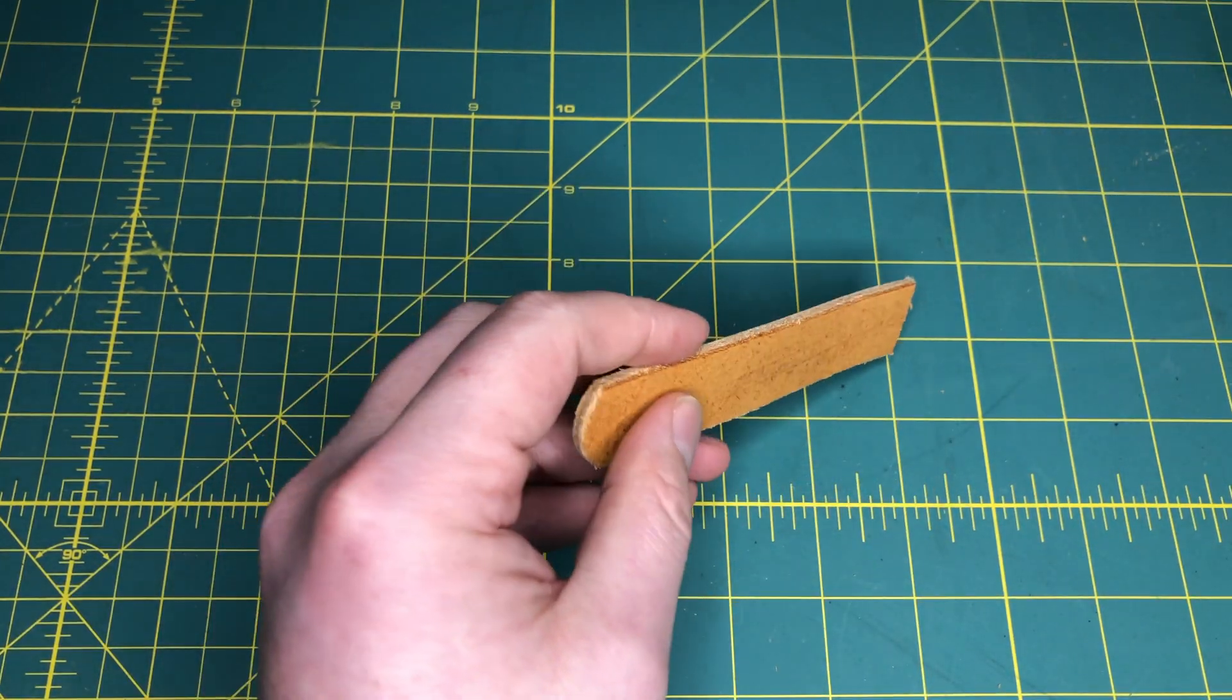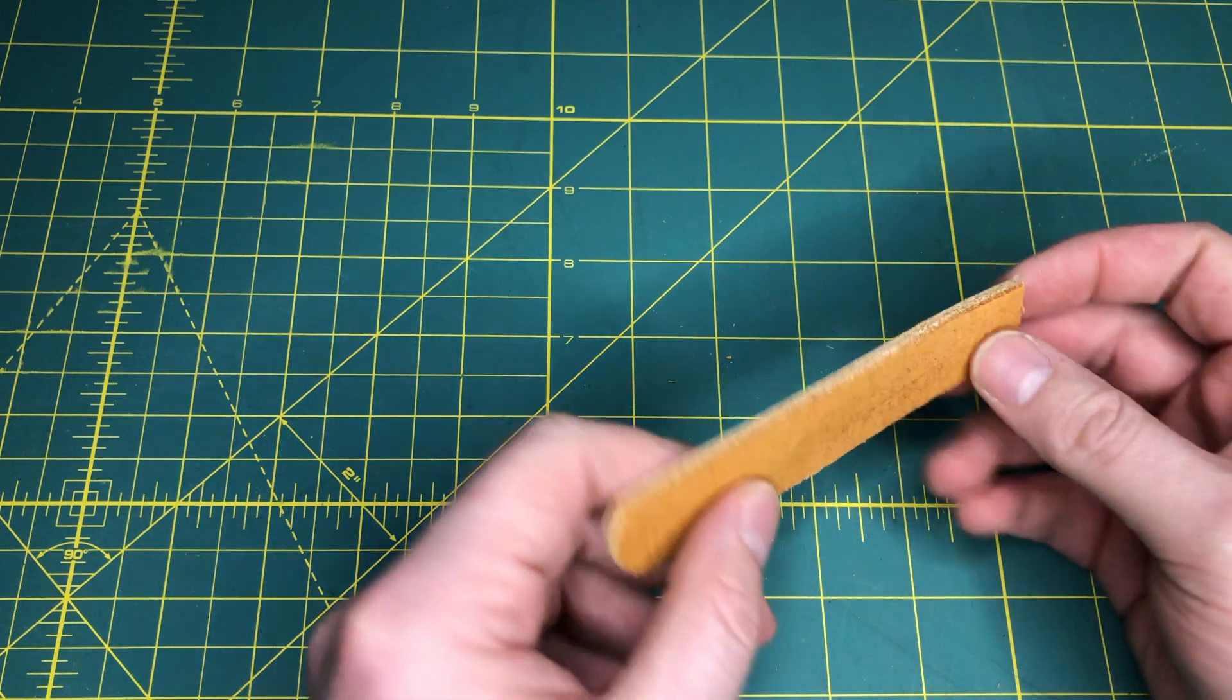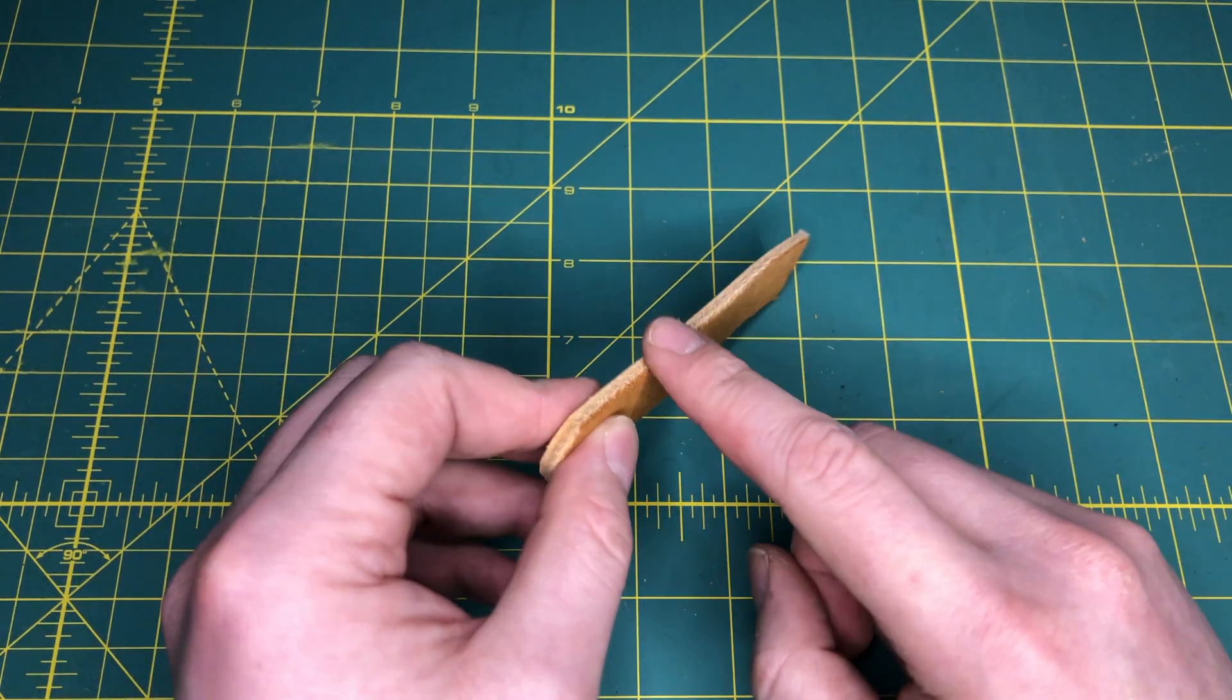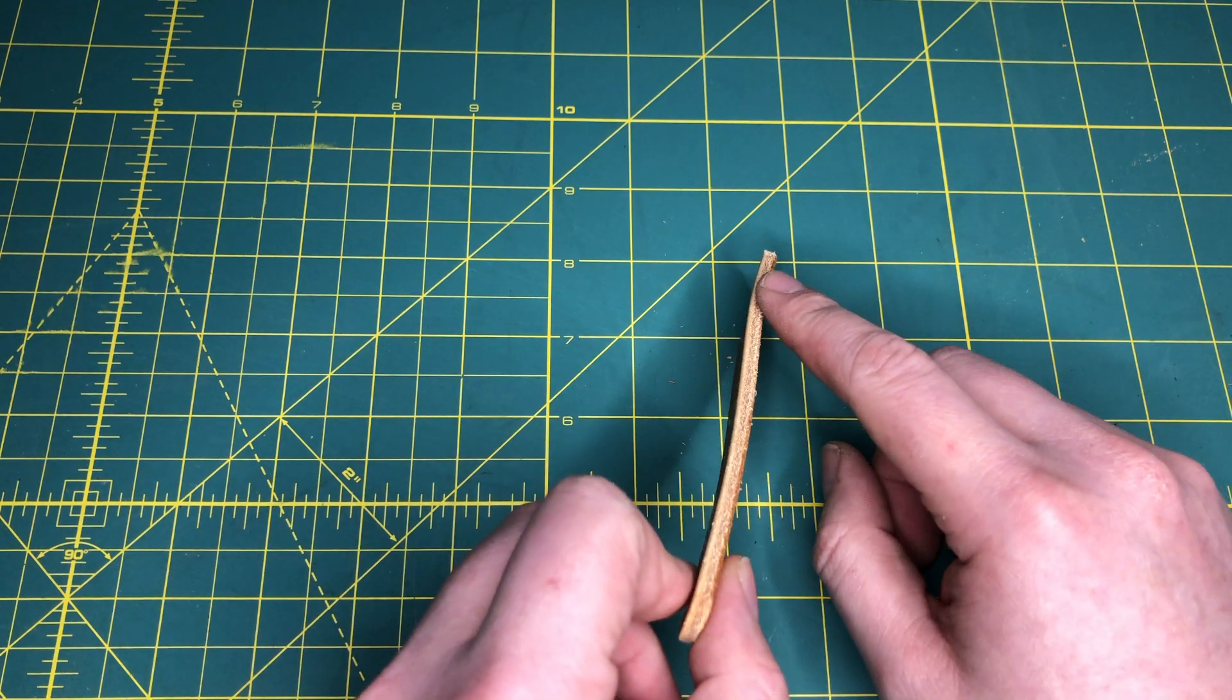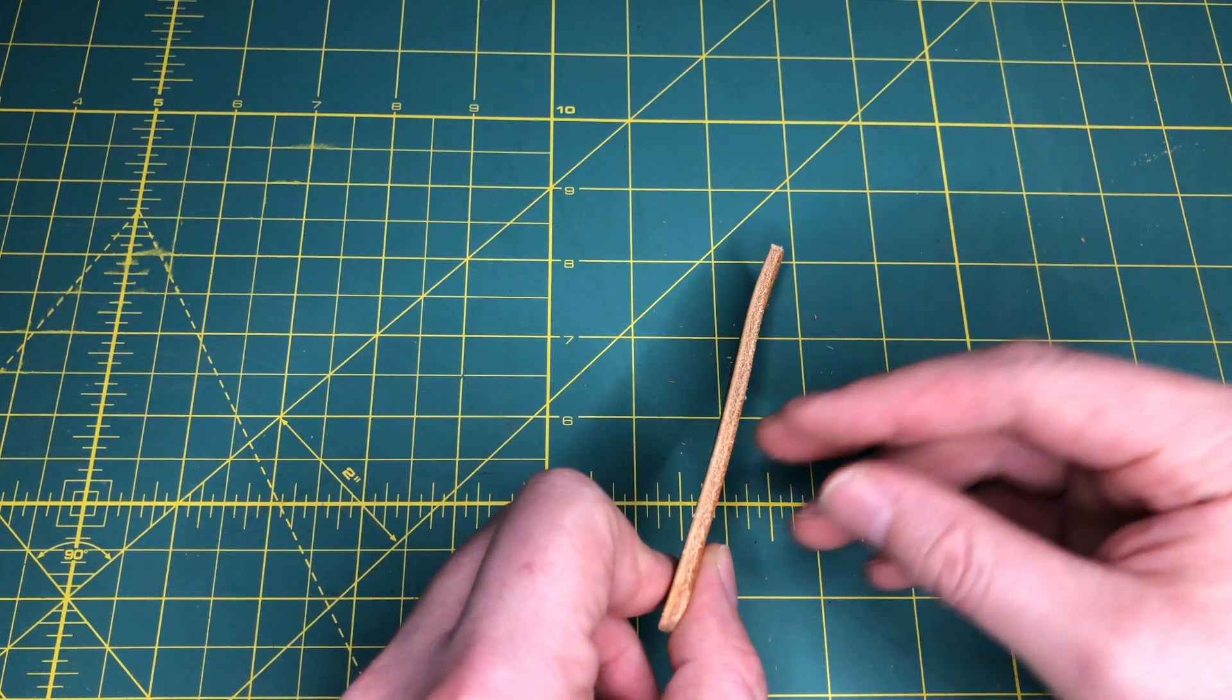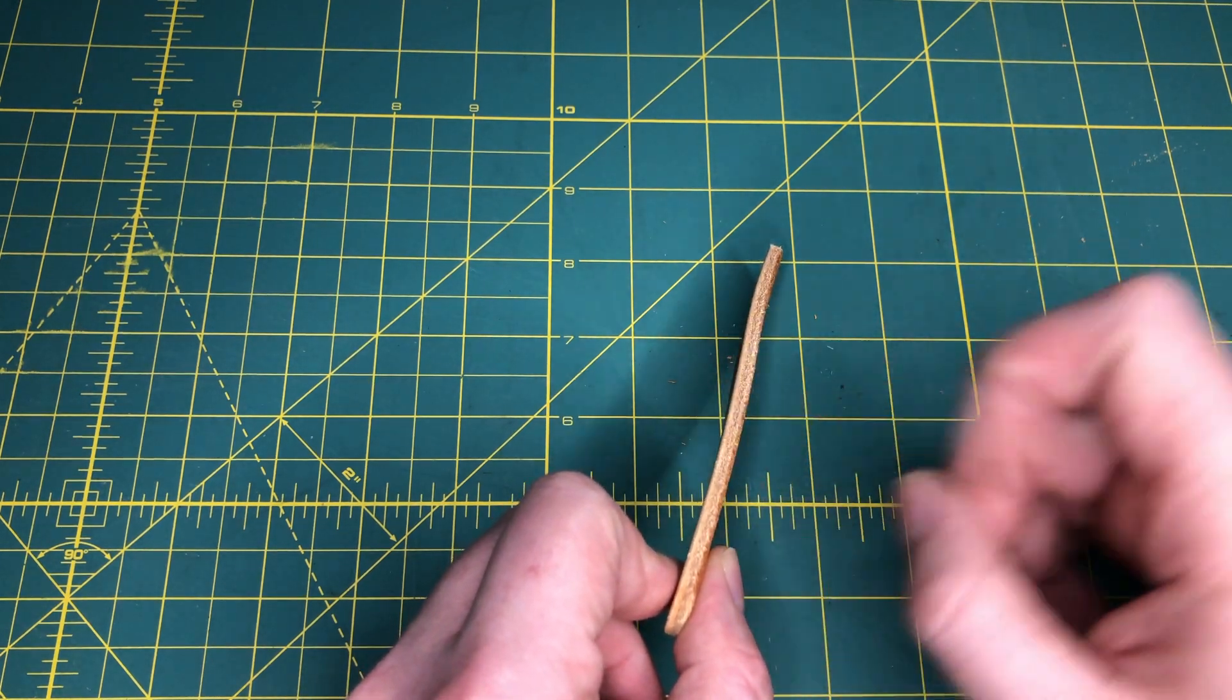Now let's talk about burnishing. This is a step to get skipped quite a bit, but is really important for a nice finished product. If you're working with veg tan leather, it also is going to seal all of these fibers from oils and water getting in and damaging that leather.